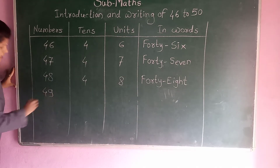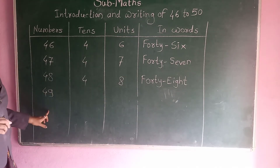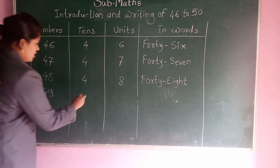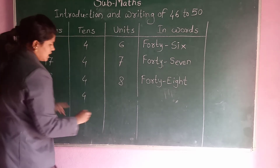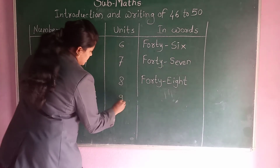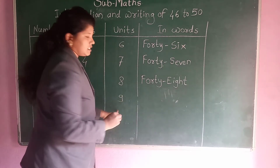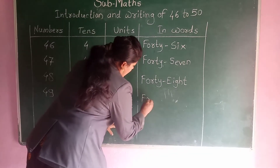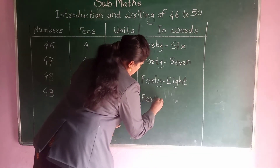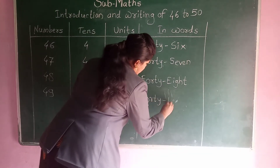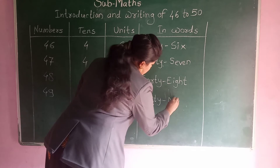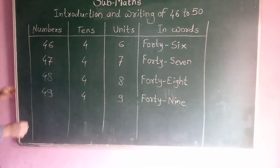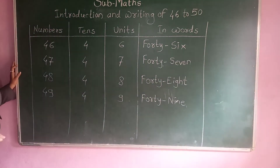Next, after 48 comes 49. This number's tens and units — 4 is the tens and 9 is the unit. And how to write in words: FORTY NINE — F, O, R, T, Y, N, I, N, E.